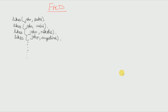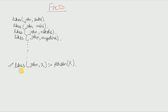What we can do instead is define a rule like: John likes X if X is a person. That means John likes everyone in our database because everyone is a person. In Prolog we write: likes(john, X) :- person(X). The symbol :- which is a colon followed by a hyphen is the if statement. By writing this single line we can avoid writing thousands of individual facts.